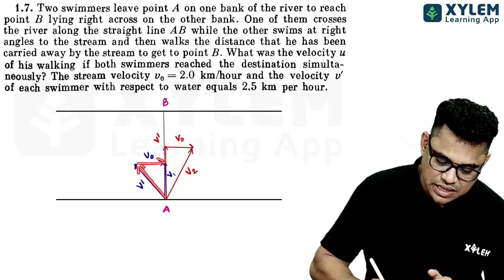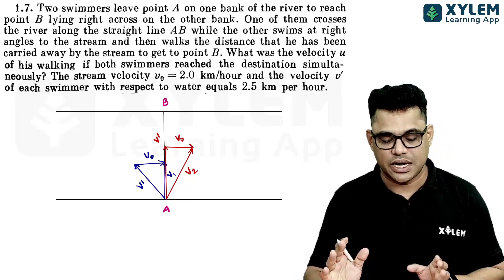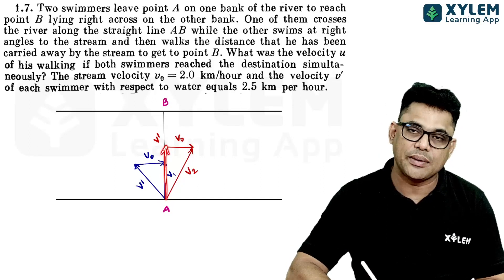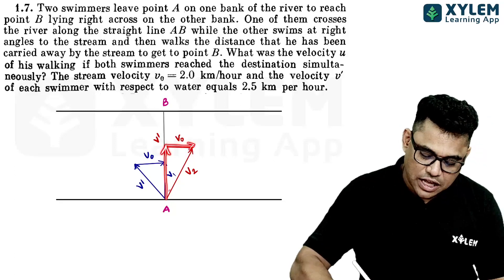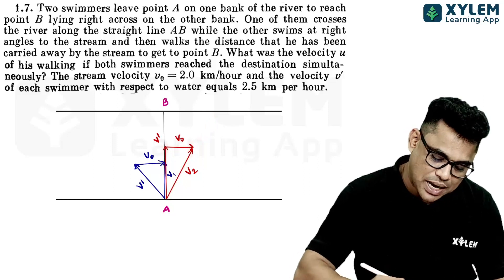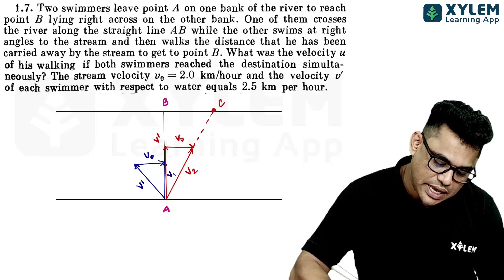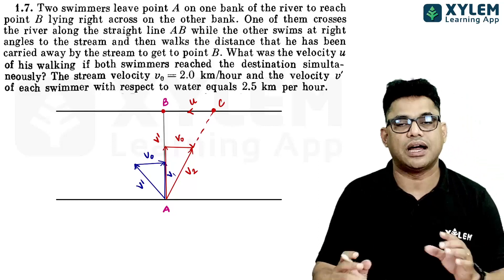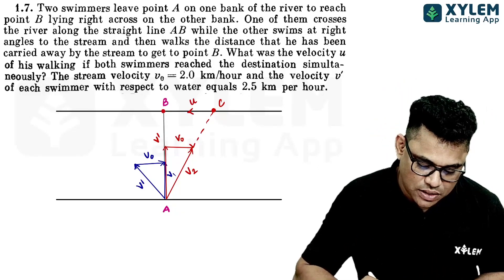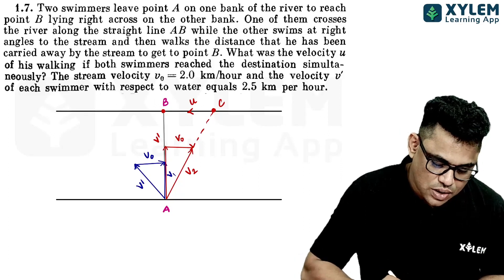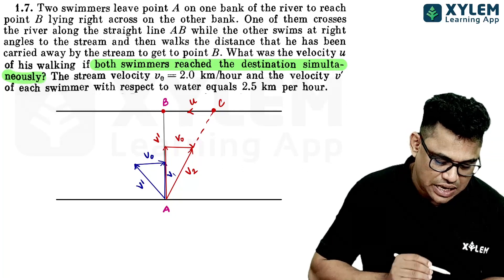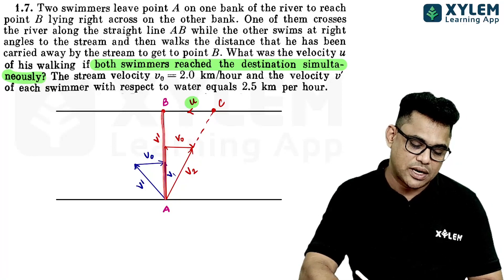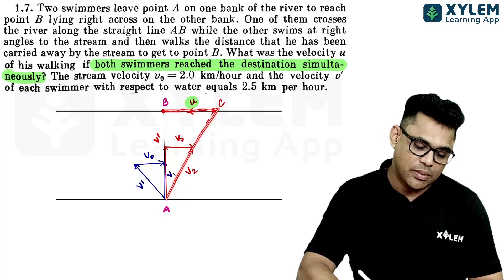The stream velocity acts this way. The second swimmer is swimming across the river perpendicular to the stream velocity. He is swimming like this but he is carried down by the current. Therefore he goes along a diagonal path. Both swimmers reach the destination simultaneously. So what we do is find the time taken by the first swimmer and the time taken by the second swimmer, then equate them.